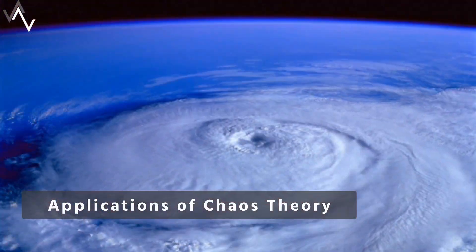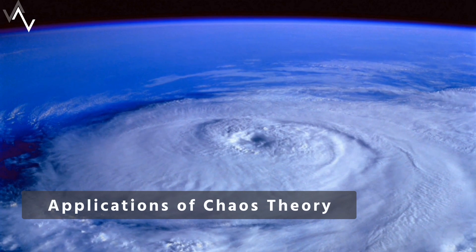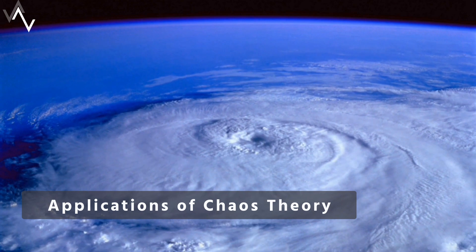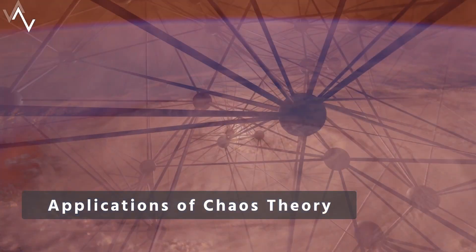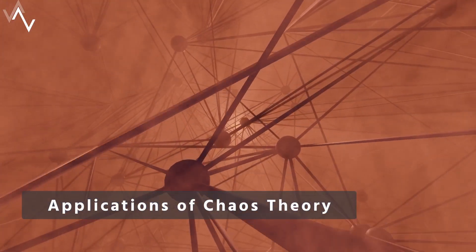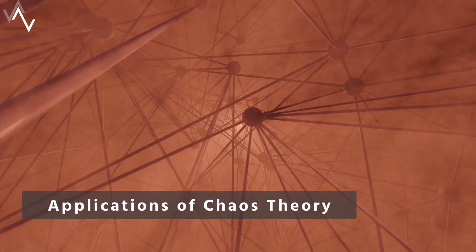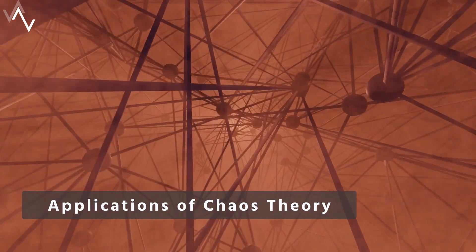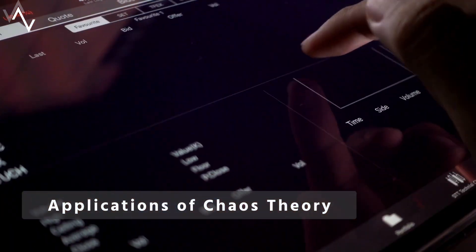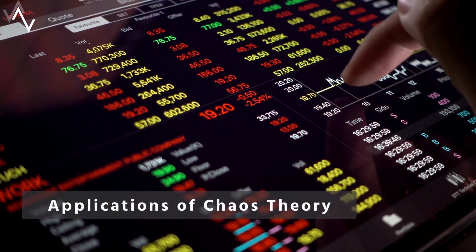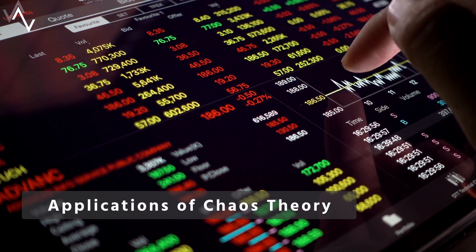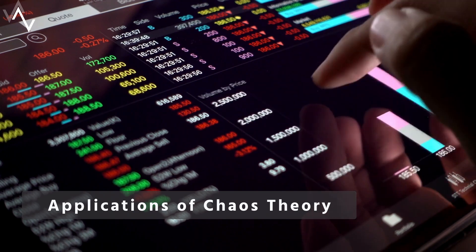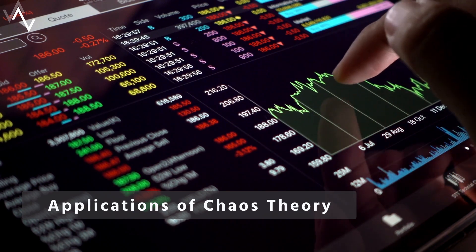Chaos theory has important applications in many fields. In physics, it has been used to study the behavior of weather systems, fluid dynamics, and quantum mechanics. In biology, it has been used to study populations, ecosystems, and neural networks. In economics, it has been used to study the behavior of financial markets and the dynamics of economic growth. One practical example is the development of chaos-based cryptography.